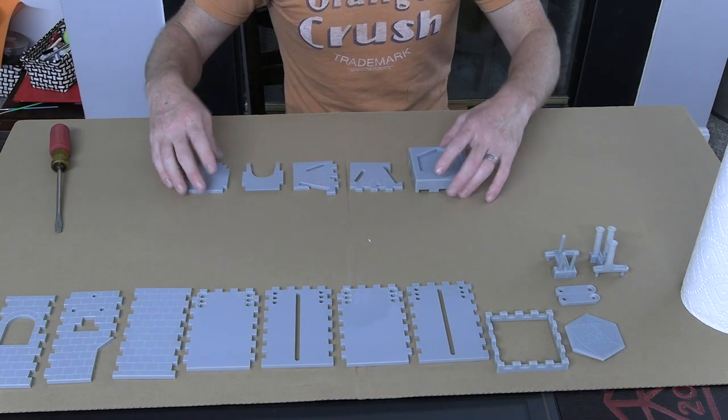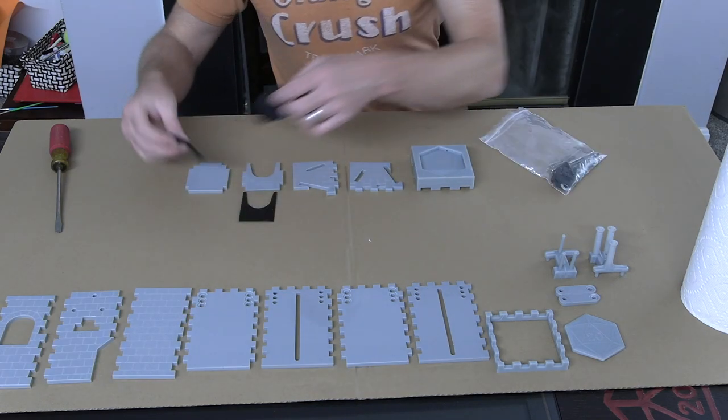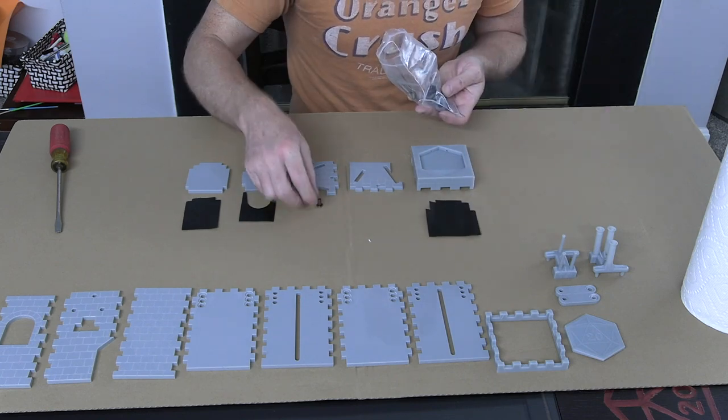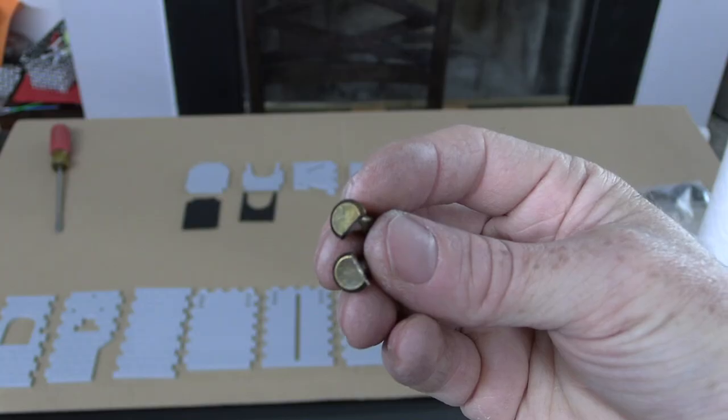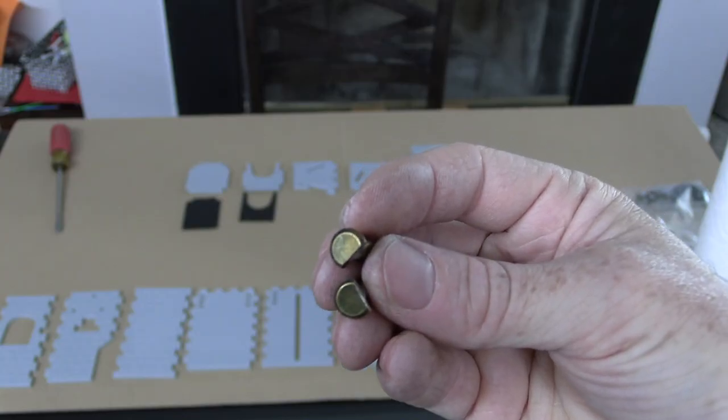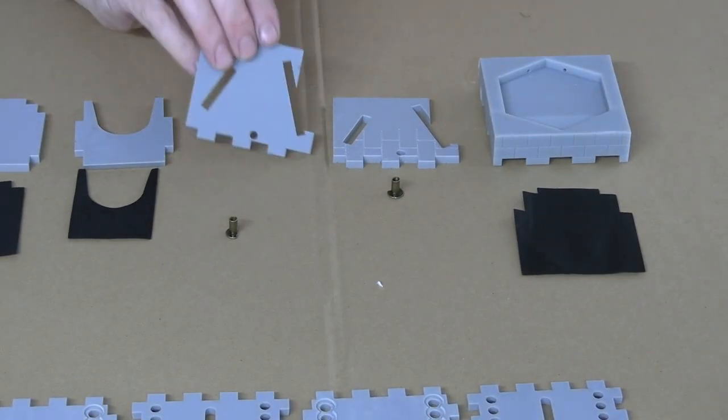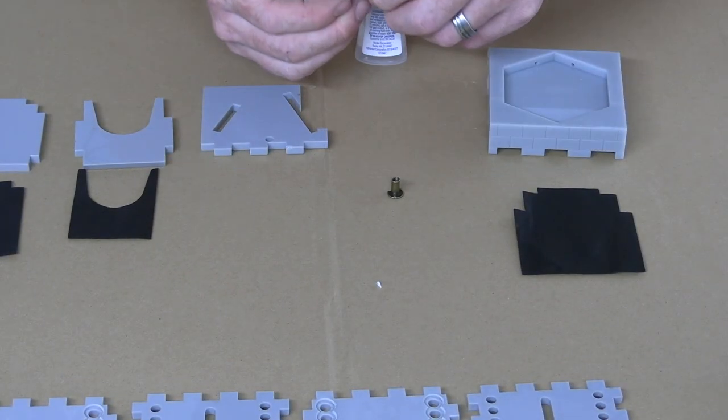Now that everything's good and clean, it's time to glue our first few bits. We're going to start with the landing pads, as well as these two 10-millimeter Chicago screws. Notice they have a half-moon shape cut into the head. These need to be glued in first because they go on the innermost section of the tower with the threads pointing out.